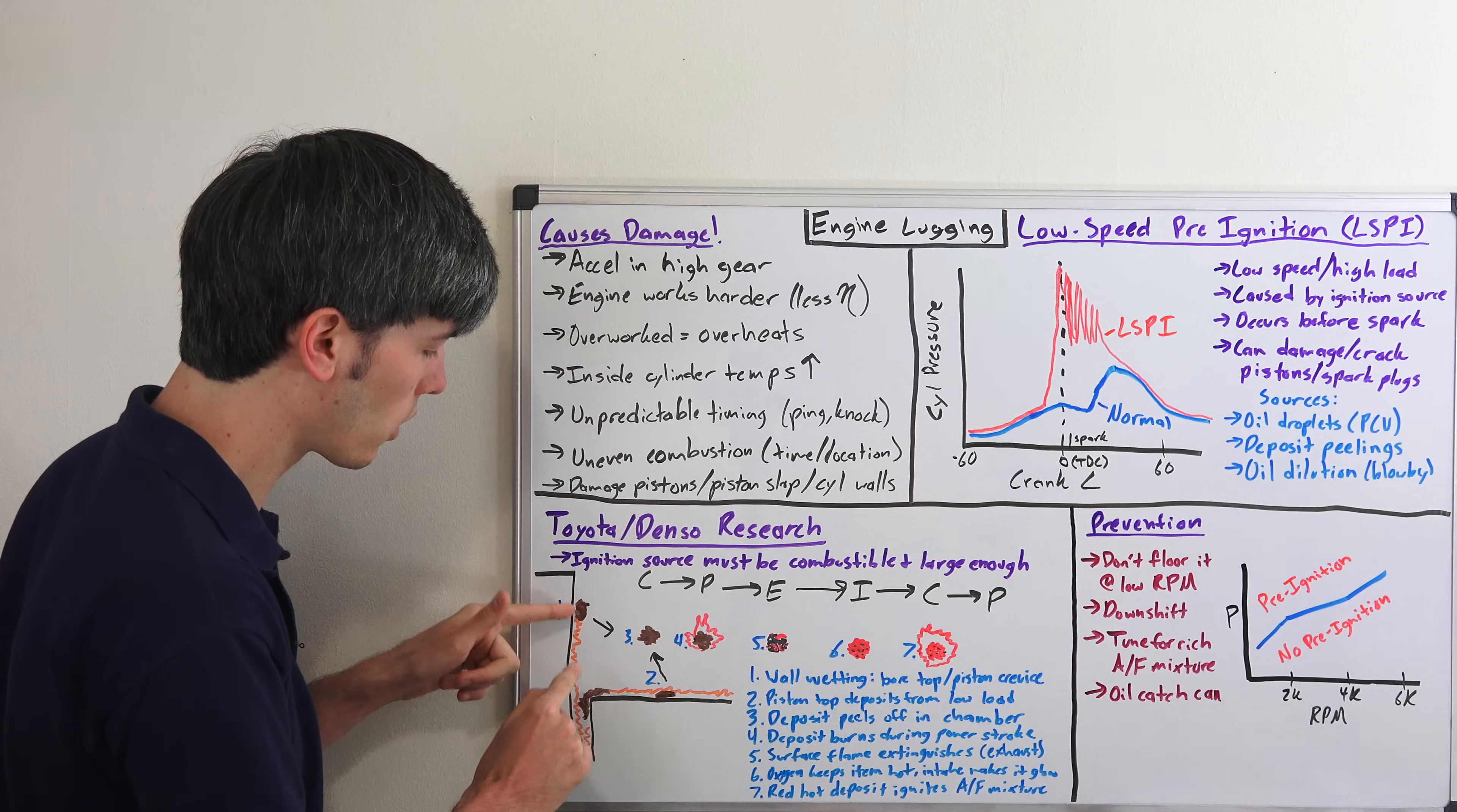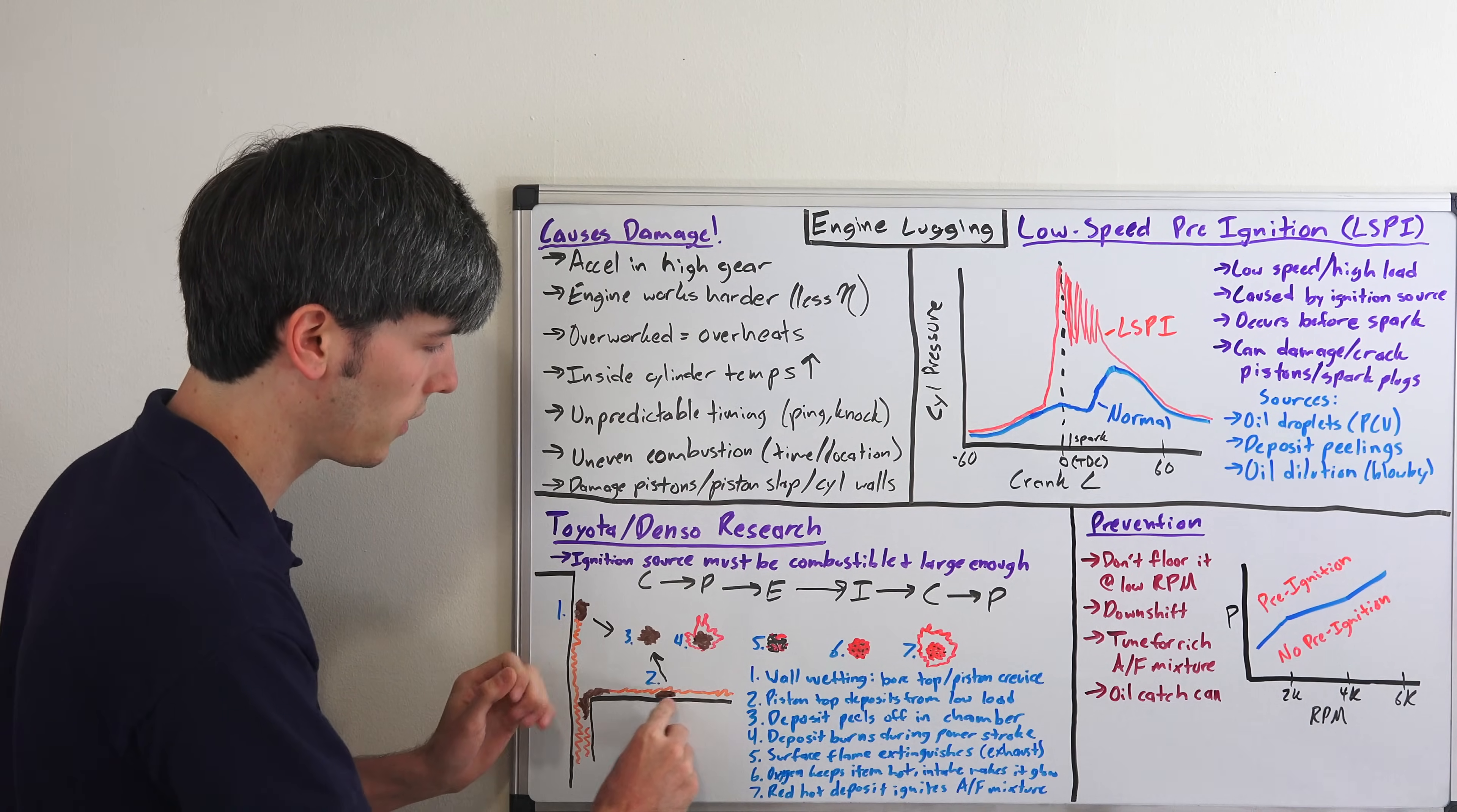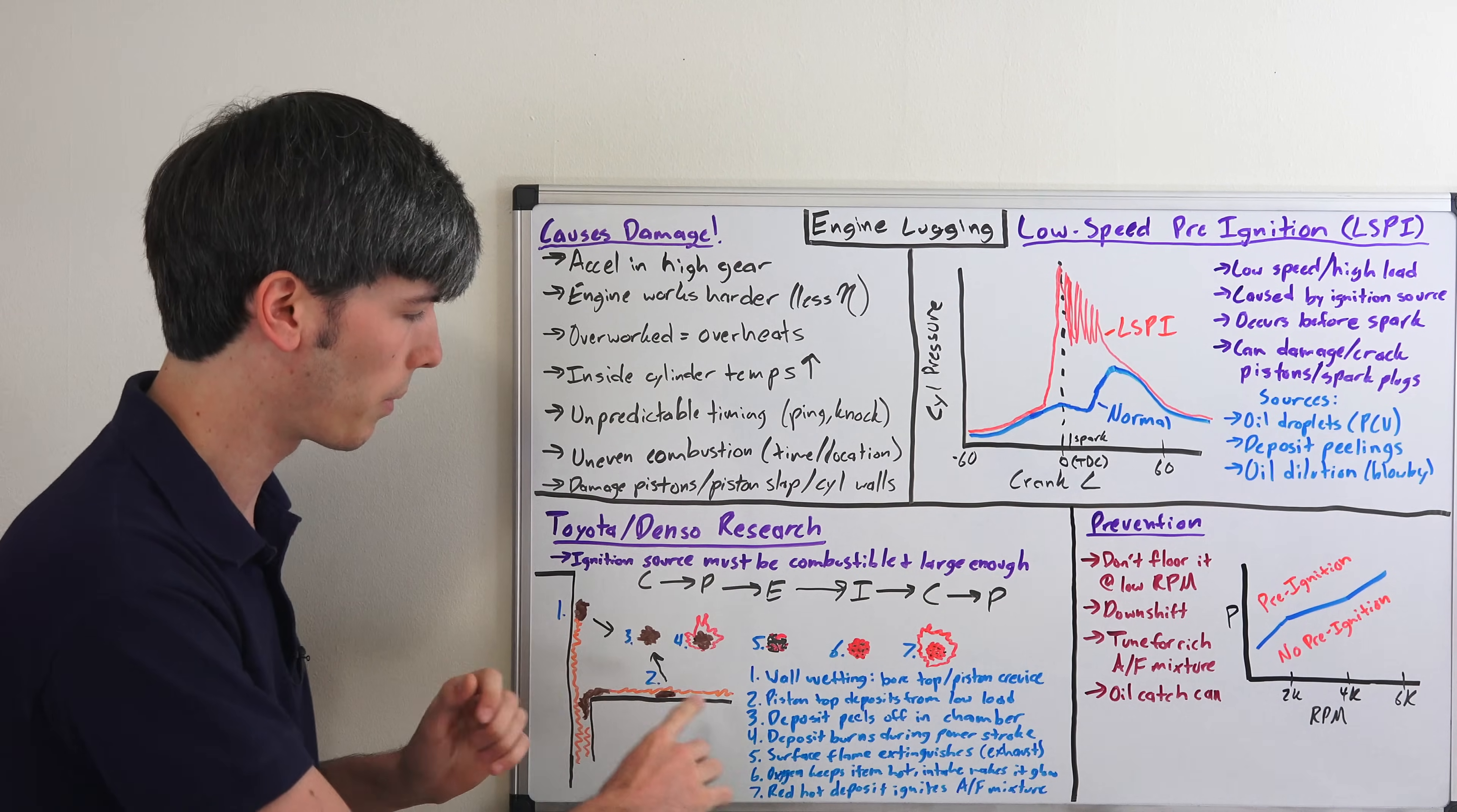They can form fairly quickly on the cylinder walls up at the top of the bore as well as that crevice where the piston meets with the cylinder. And then they kind of form fairly slowly on top of the piston itself under low engine RPM, high load operations or low load operations rather.